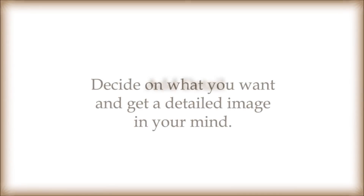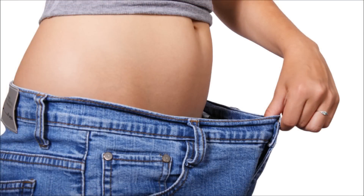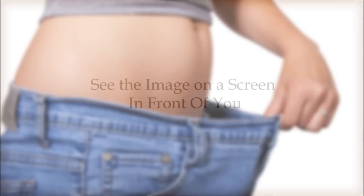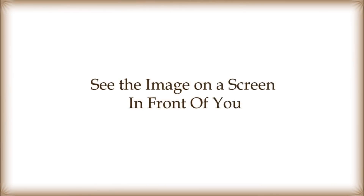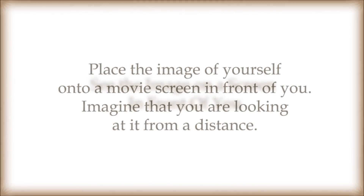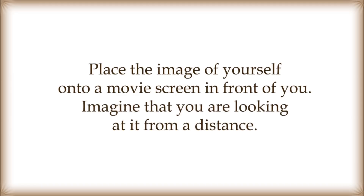Add detail. Decide on what you want and get a detailed image in your mind. For example, if you want to lose weight and be healthy, imagine an image of yourself at your ideal weight, looking happy and healthy. Add in more details — perhaps a sexy new outfit or finally fitting into a favorite pair of jeans. See the image on a screen in front of you. Place the image of yourself onto a movie screen in front of you and imagine that you're looking at it from a distance. Make any changes to the image that you want until you're satisfied.